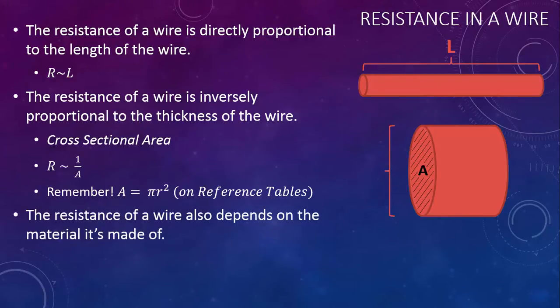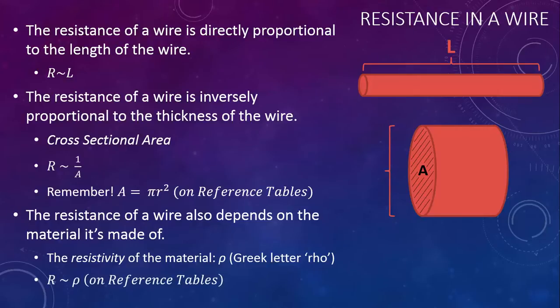Finally, the resistance of a wire depends on what material it's made out of. Wires can be made out of copper, or gold, or silver, or a variety of other metals. Each material has a property called resistivity. This is abbreviated by the Greek letter rho. The resistance of a wire is proportional to the resistivity of the metal that it's made of. You can look up the resistivities of certain metals on your reference tables.